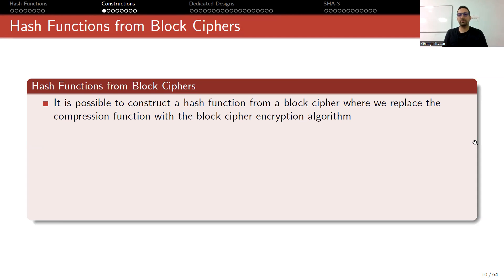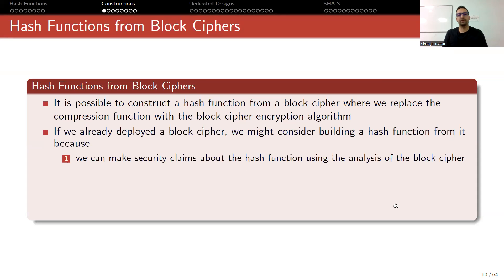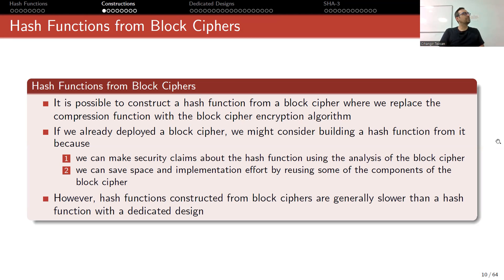It is possible to construct a hash function from a block cipher where we replace the compression function with the block cipher encryption algorithm. Why should we do such a thing? If we already deployed a block cipher, especially on hardware, we might consider building a hash function from it because we can make security claims about the hash function using the analysis of the block cipher. Also, we can save space and implementation effort by reusing some of the components. However, hash functions constructed from block ciphers are generally slower than a hash function with dedicated design, and generally in practice nowadays I don't see people using this.